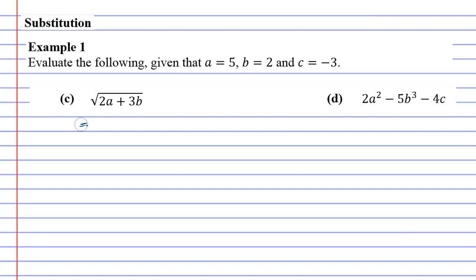If we look at question C, you'll notice that we've got a square root sign, and you'll notice that the line at the top goes all the way across, and that's quite important that that is maintained. So 2A is the same as 2 times A, and 3B is the same as 3 times B. Making sure the line goes all the way across, very important.